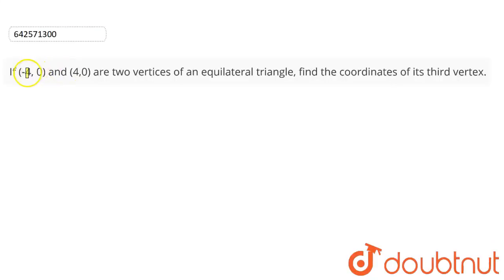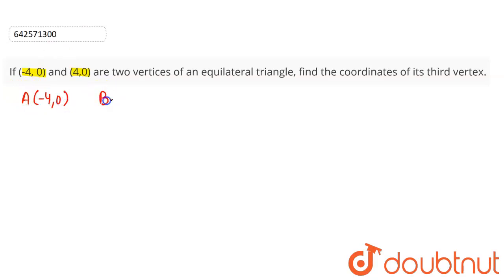We have been given two vertices of an equilateral triangle: (-4, 0) and (4, 0), and we have to find the coordinates of its third vertex. Let A be the point (-4, 0), B be the point (4, 0), and C be the point (x, y). We need to find the values of x and y.